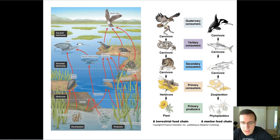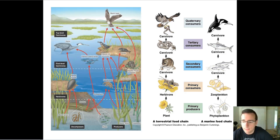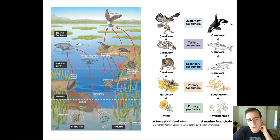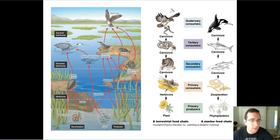Now in this video, I want to talk about some things that sometimes happen to ecosystems that can affect the quality of the ecosystem and have effects on the food web. The first thing I want to talk about is extinctions. Let's say, for example, that you were to delete the top level carnivore in the food chain — so you kill off the hawk.